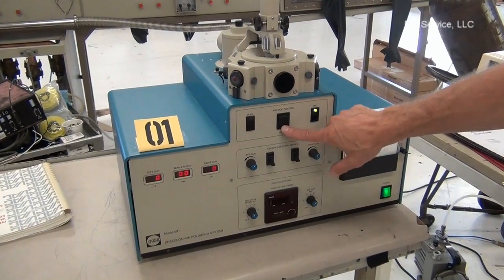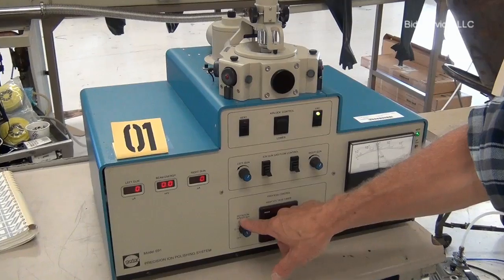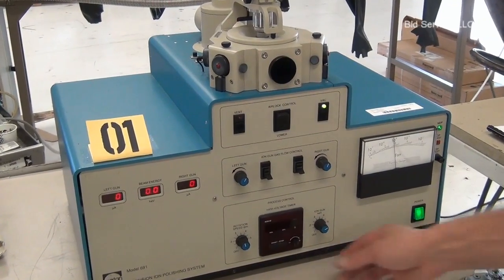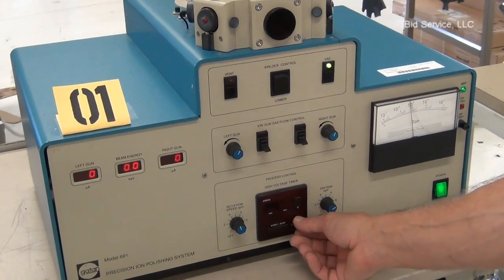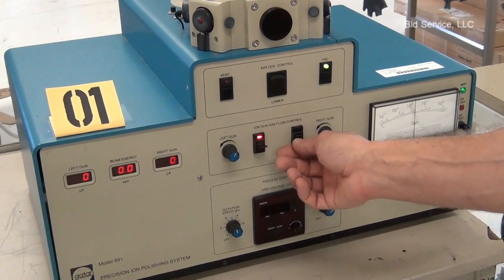Okay, we've got the airlock control in the lower position, rotational speed set at 3 RPMs. What I'll do is turn on the gas, the argon.